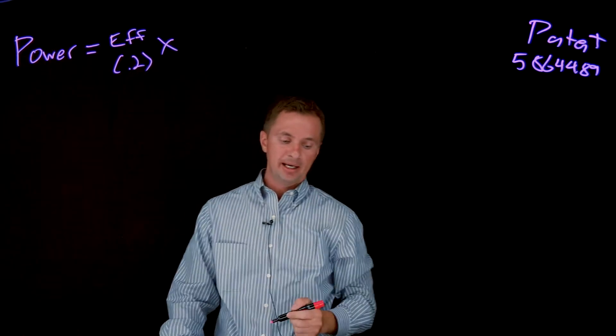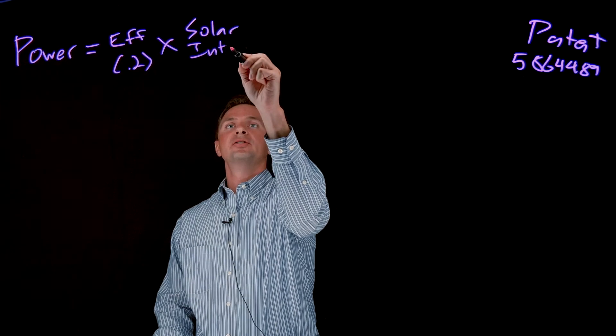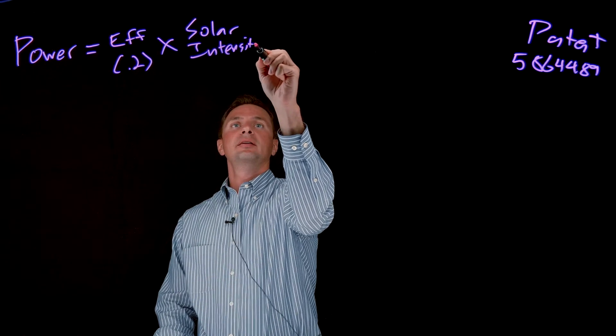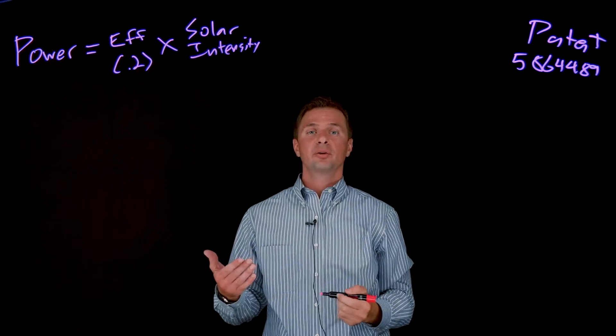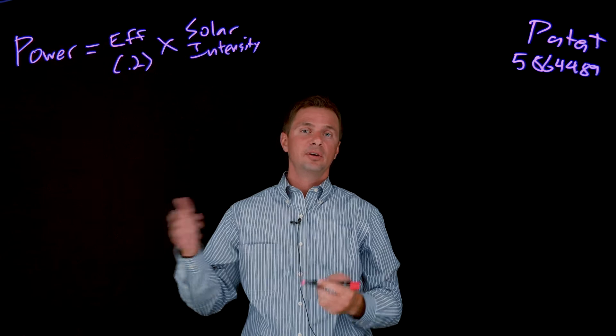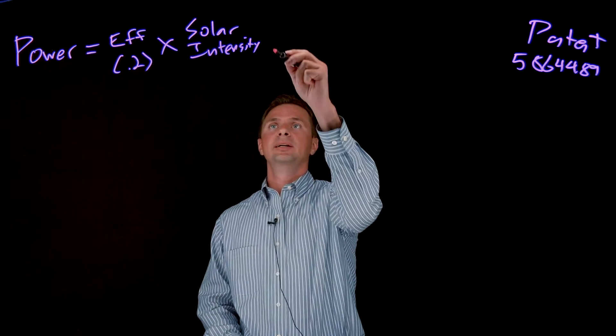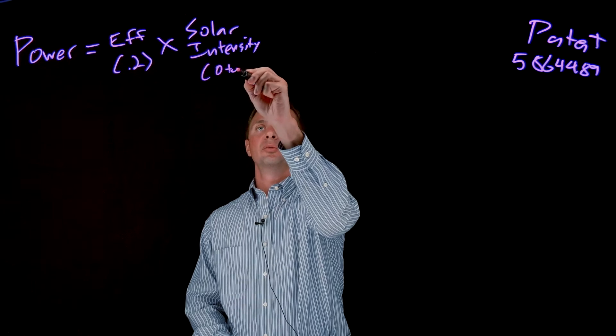So multiply that by the solar intensity, which is the amount of sun that the spacecraft has on this solar array. So if you are in direct sunlight, it would be a value of 1. And if you're in eclipse, then it would be a value of 0. And then penumbra would be somewhere in between. So this is somewhere from 0 to 1.